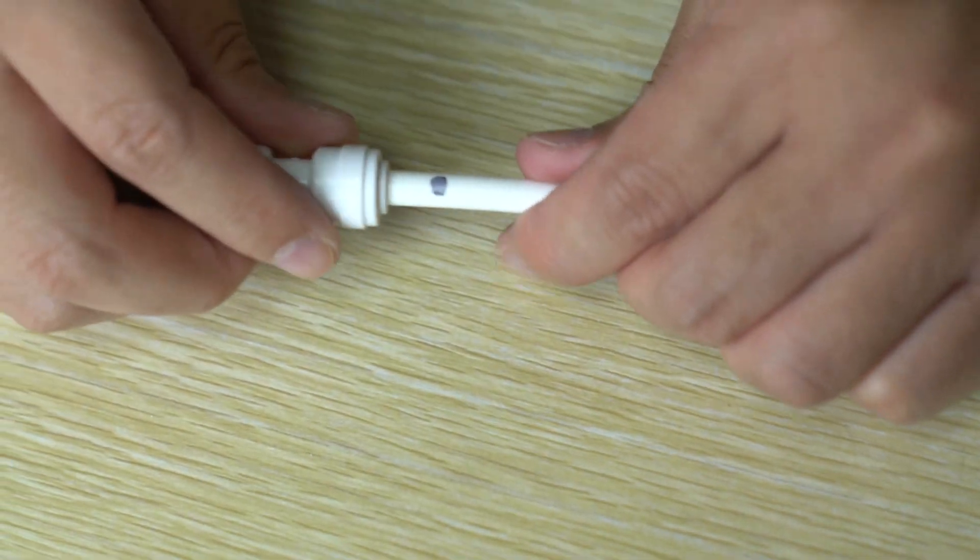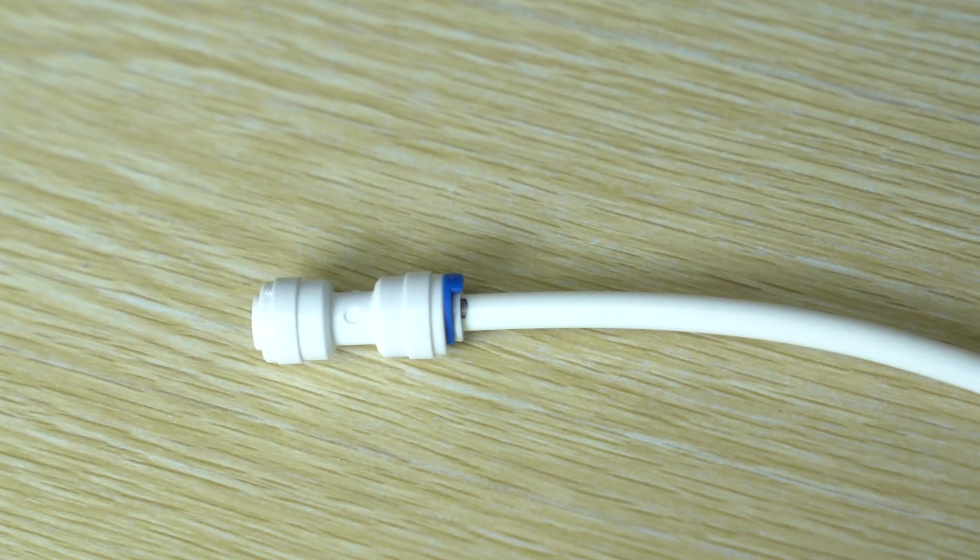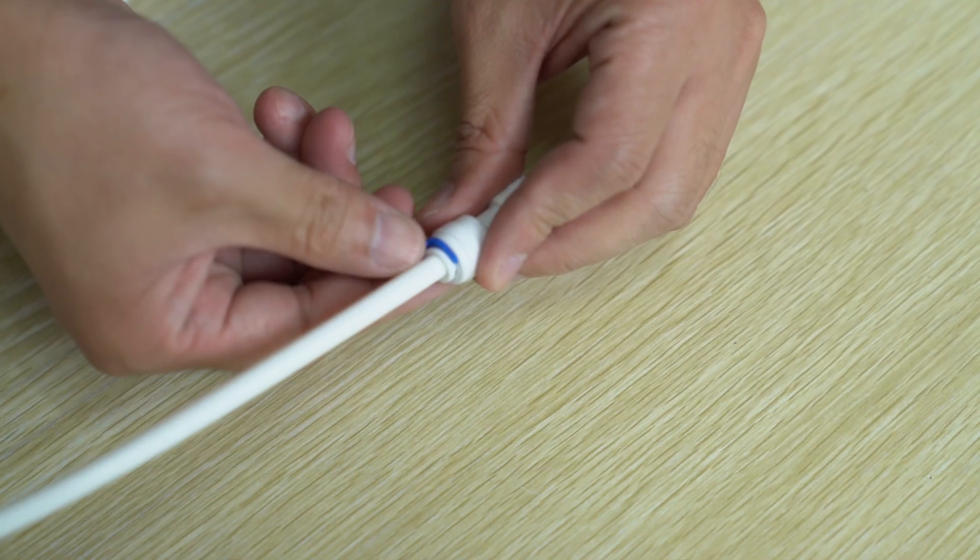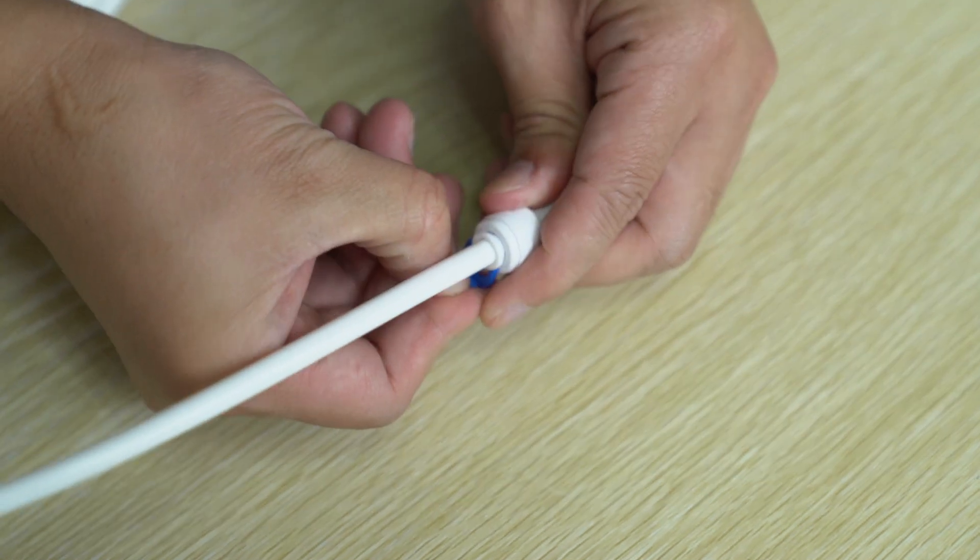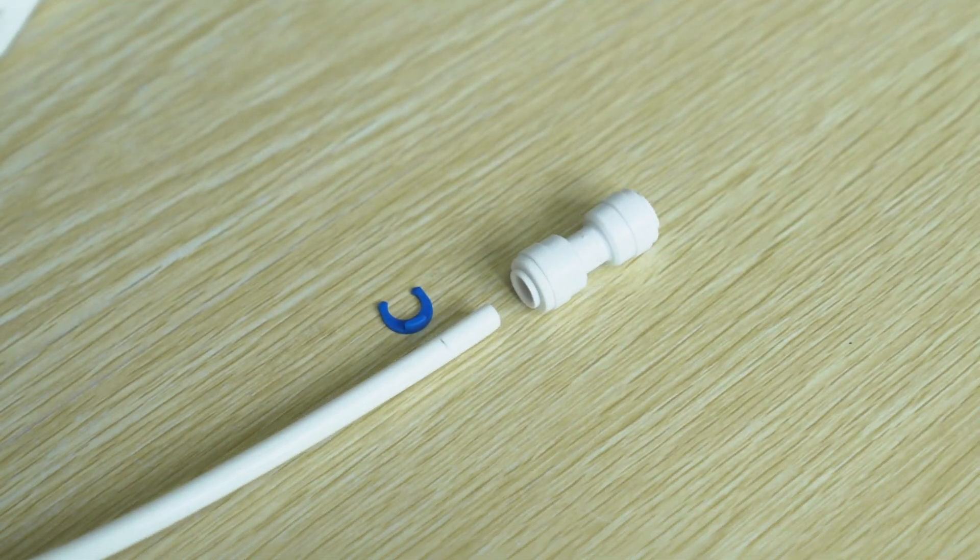When cutting the PE tube, use pipe cutters or a sharp knife, making sure you get a clean, square cut. To make sure the tube has been inserted correctly and to avoid any leaks, make a pen mark 5 eighths inch up from each end. That way you can tell if you inserted the tube fully into the Quick Connect fittings. To remove the tube, remove the locking clip and hold down the collar against the fitting and pull the tube in the opposite direction to release the grip.